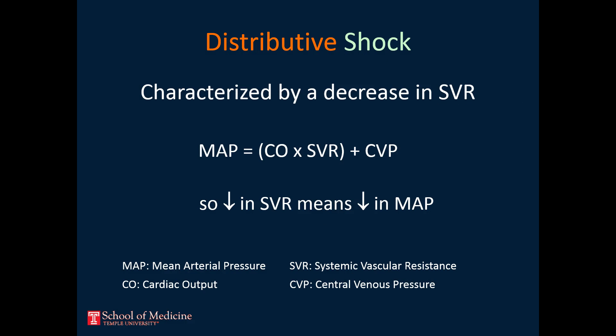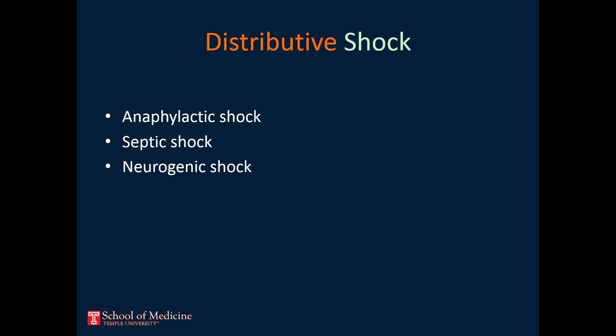The next type of shock we'll consider is distributive shock. This occurs when there is a drop in systemic vascular resistance. This means that the peripheral arteries dilate, mean arterial pressure drops, and the perfusion of tissues decreases. This happens for three main reasons. The first is anaphylaxis. In anaphylactic shock, there is an immune-mediated drop in systemic vascular resistance.